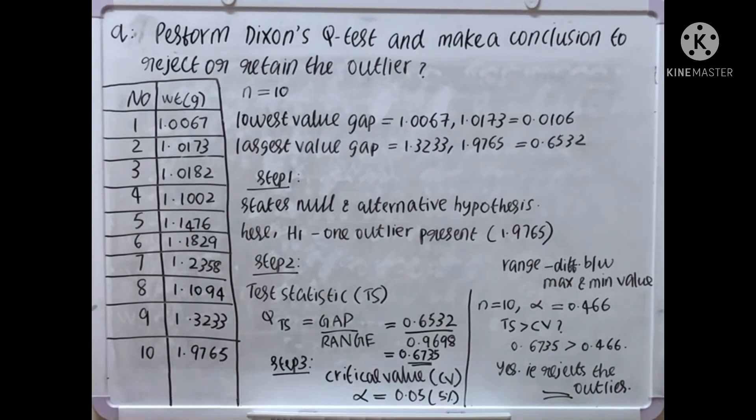Yes, if it is yes, that is reject the outlier. If it is yes, reject the outlier. If it is no, retain the outlier. Here we reject the outlier. TS greater than CV.